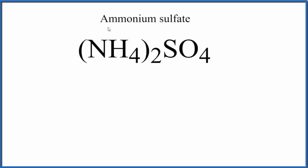In this video, we'll draw the Lewis structure for ammonium sulfate. That's (NH4)2SO4. And really, we need to draw two different Lewis structures.